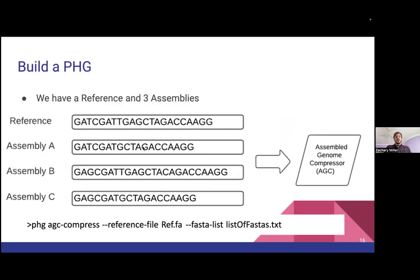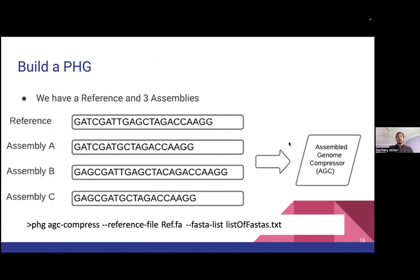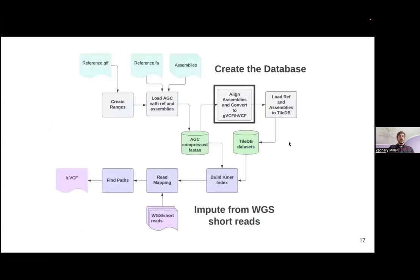Now we look at loading. Say we have a reference and three assemblies — these would be the sequences before they've been sliced up. You basically load all those FASTA file names into a list and run the AGC compress command. It makes an AGC record that has all these compressed and ready to be used later on.